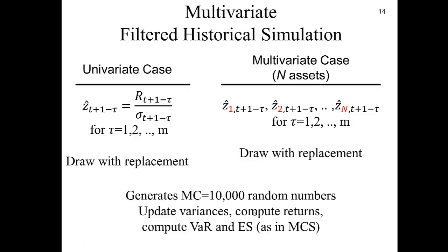We update variances, compute the portfolio return the same way as in the Monte Carlo simulation to compute Value at Risk and Expected Shortfall. Importantly, in the multivariate case, the z's must always be taken from the same day — you cannot mix different days. The tau variable is the same for all returns, so if tau equals 2, then all securities use t+tau-2 for that draw.